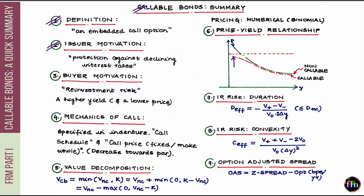Let's take a look at what sort of motivation the issuer of the bond will have to prefer a callable bond over an equivalent non-callable bond with the same coupon and maturity. The callable bond grants to the issuer some kind of protection against declining interest rates. The callable bond is like a liability for the issuer. If interest rates were to go down, it means that the size or value of the liability goes up, which is not a very welcome scenario for the issuer. The issuer therefore welcomes the protection which the callable bond offers.